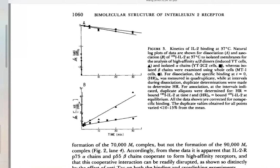Looking at the association rate, the P55 binding goes on so fast it's hard to measure. The P75 alone shows slower association, and cells with both chains show similarly slower association compared to P55 alone.